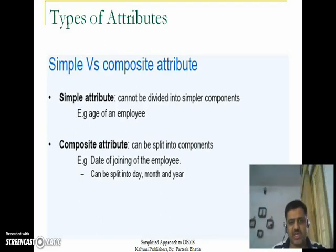Those attributes which cannot be further divided are called Simple Attributes, like Roll Number - it cannot be further divided. Age of an employee cannot be further divided. These are Simple Attributes.